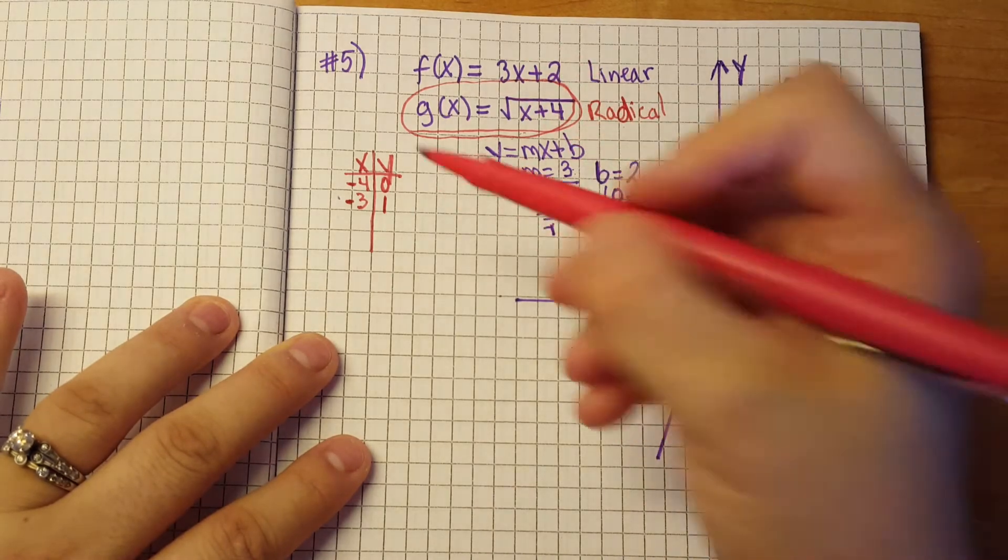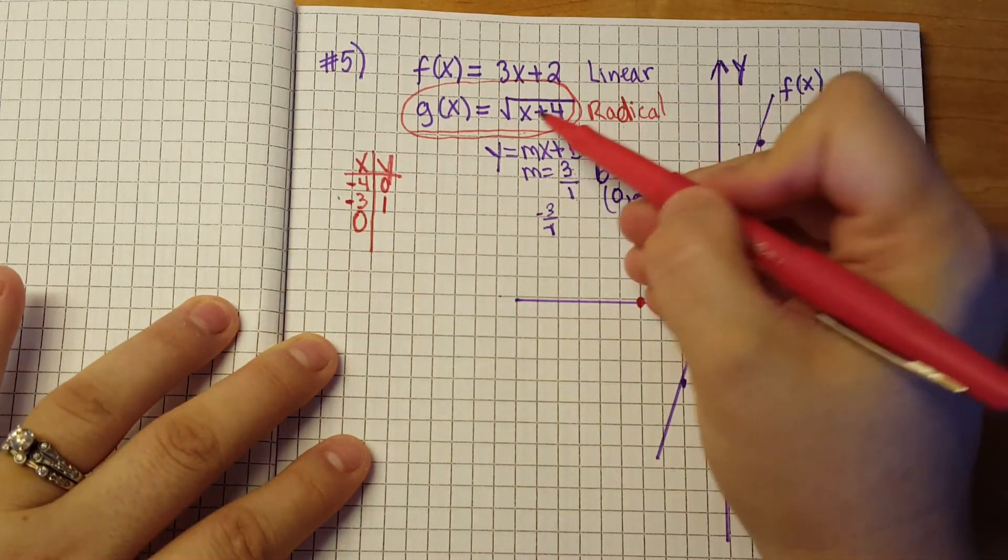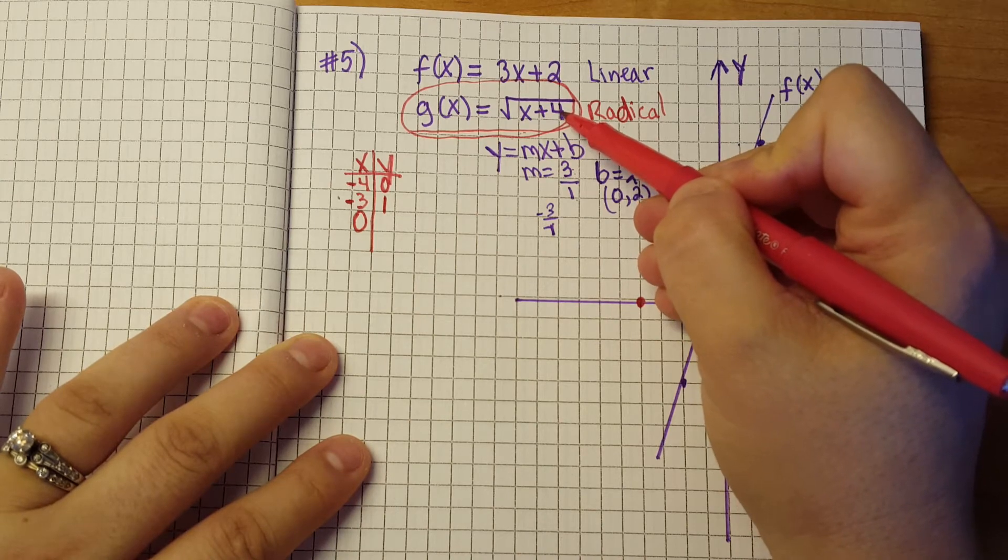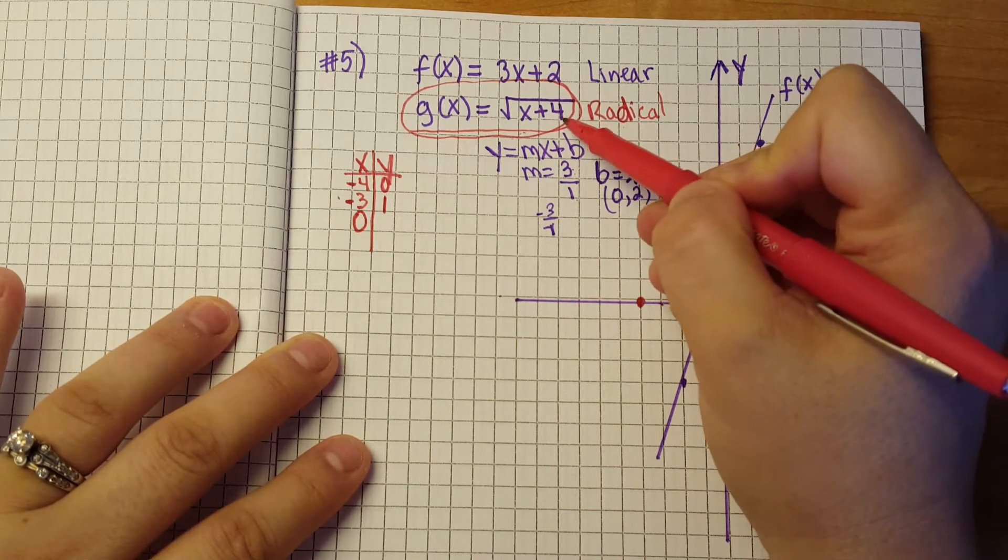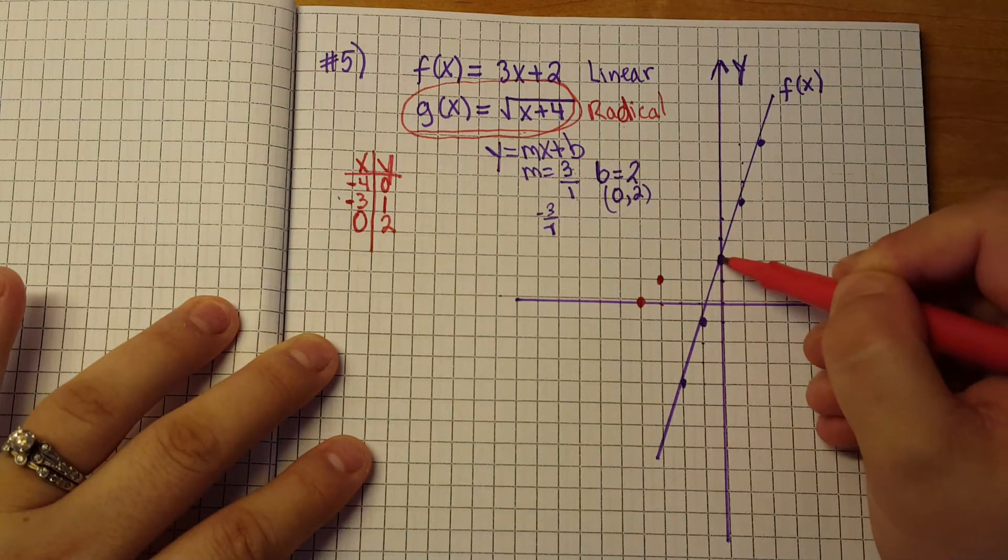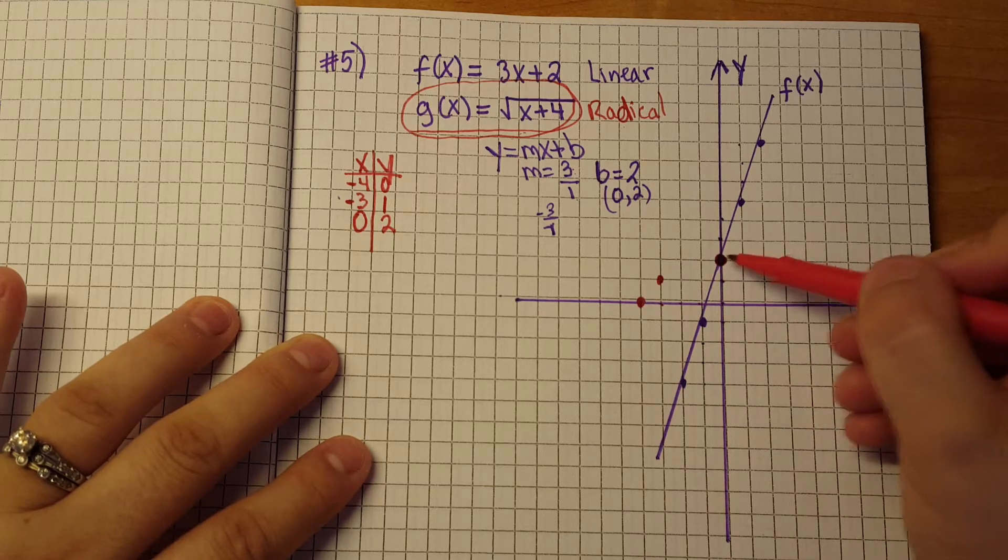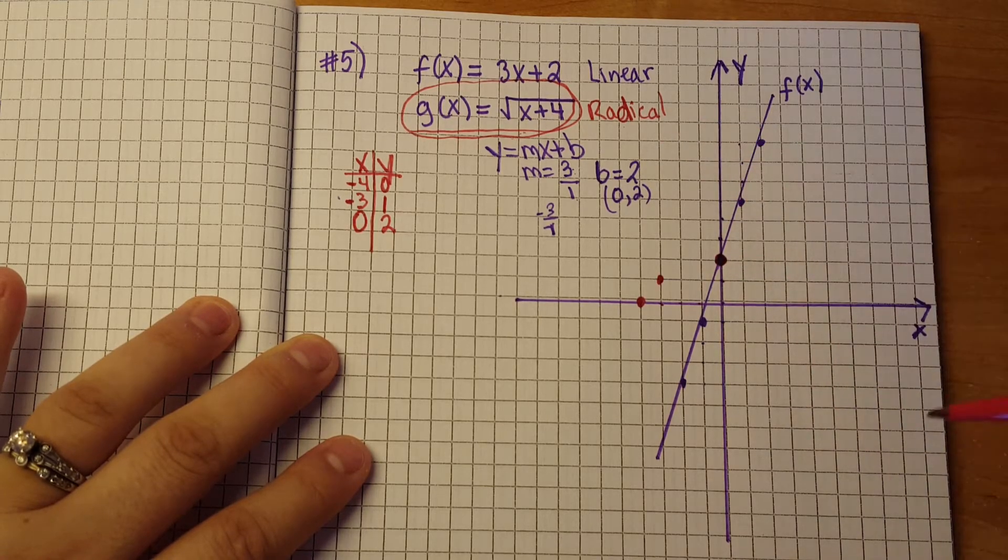Our next number at this point, we could definitely pick 0 because we know that 0 plus 4 is 4 and 4 is a perfect square and the square root of 4 is 2. So we're up here at 0, 2 and we should notice something here, we're right on top of our y intercept for our previous problem.